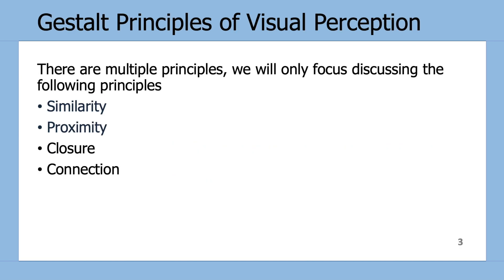Of the Gestalt Principles of Visual Perception, we will only be focusing on four, which are listed here: similarity, proximity, closure, and connection.